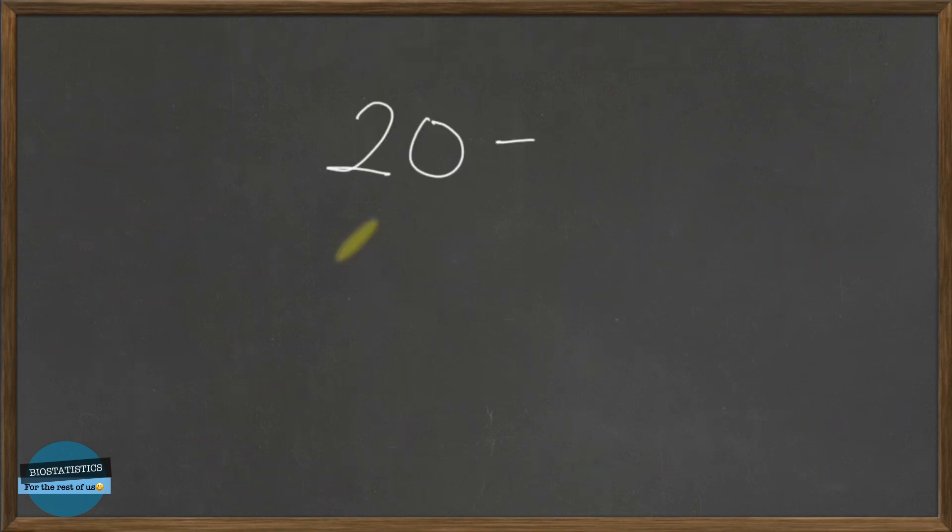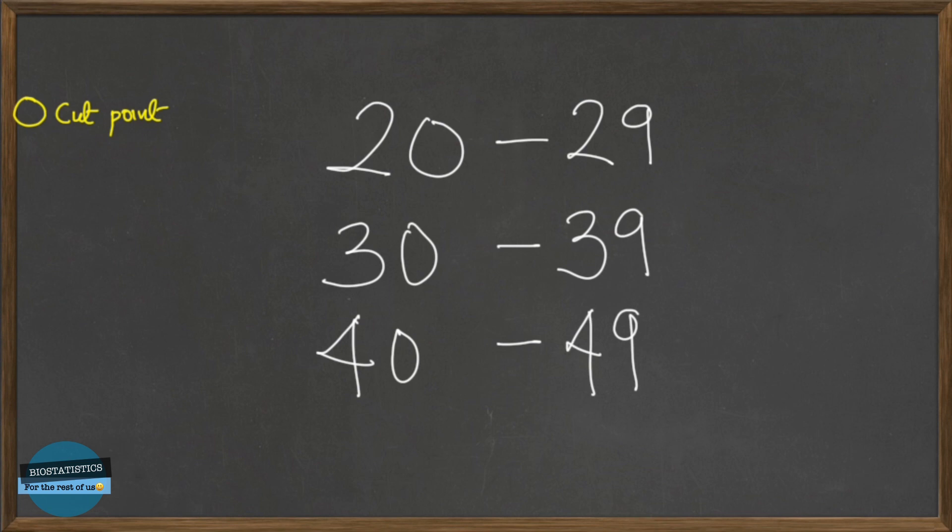The next thing we'll be talking about is called cut points. So for cut points, you have lower cut points and upper cut points. The lower cut point is actually the smallest value that can go into a particular class. That's similar to the lower class limit. However, the upper cut point is actually the lowest value that can go into the next class. I'm going to repeat this again.